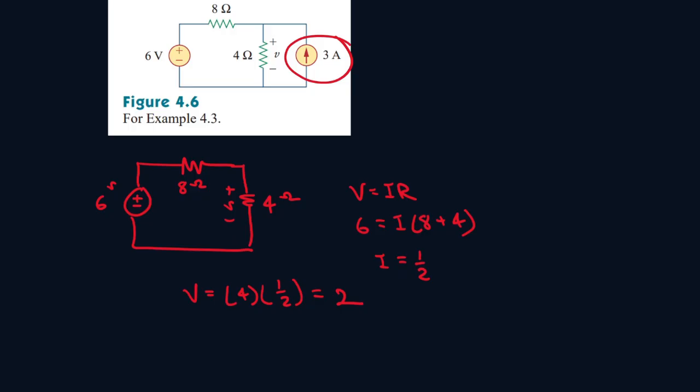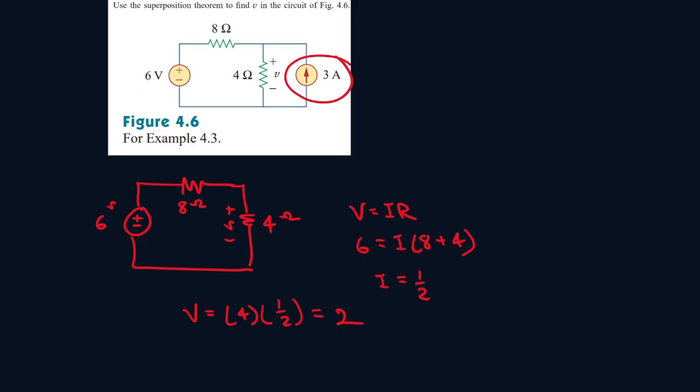Now before you start writing this, jumping to conclusion, this is not your answer. Because superposition, you have to do another step. So this will be V1. Let's call it V1. This is not V, this is V1.